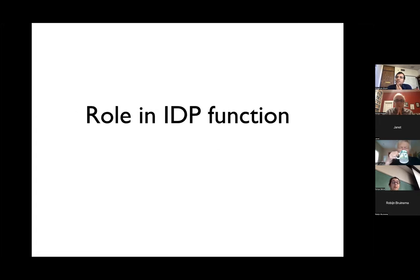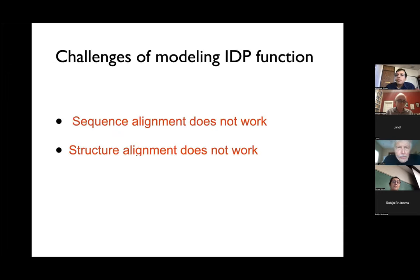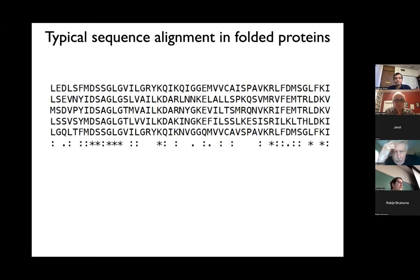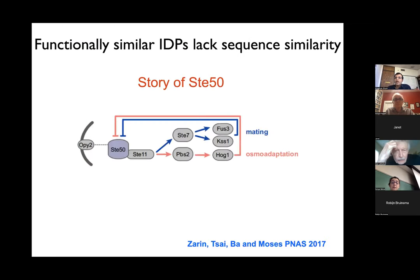Can we do something with these ideas for IDP function? In the remaining few minutes let me tell you about application to function. One problem with IDPs is that these sequences cannot be aligned very well, even if you have two functionally similar disordered proteins. They also don't have structure, so structural alignment doesn't work either — both ideas that work for folded proteins fail here.